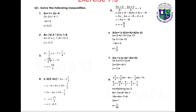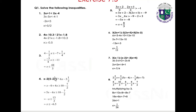Question 3: 4 minus (1/2)x greater than or equal to minus 7 plus (1/4)x. Rearranging: minus(3/4)x greater than or equal to minus 11, so x less than or equal to 44/3. Solution: x ≤ 44/3.